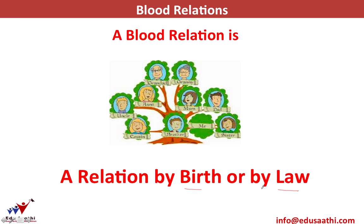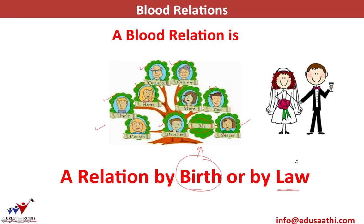The first question is: what is a blood relation? A relation by birth or by law is called a blood relation. Looking at this family tree, I have a brother, a sister, a mom, a dad, a granddad, a granny, an aunt, and an uncle. All these relations exist because I was born into this family — these are relationships by birth.